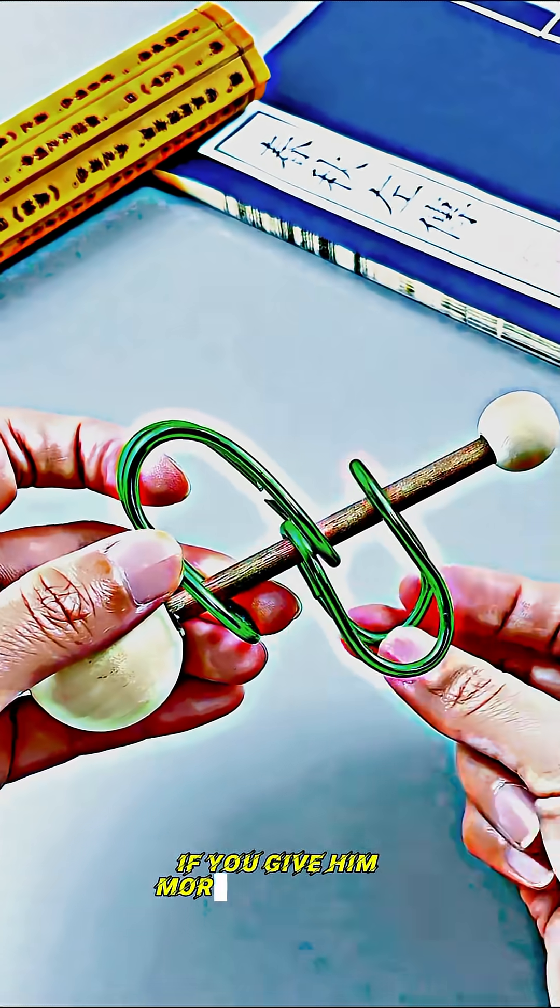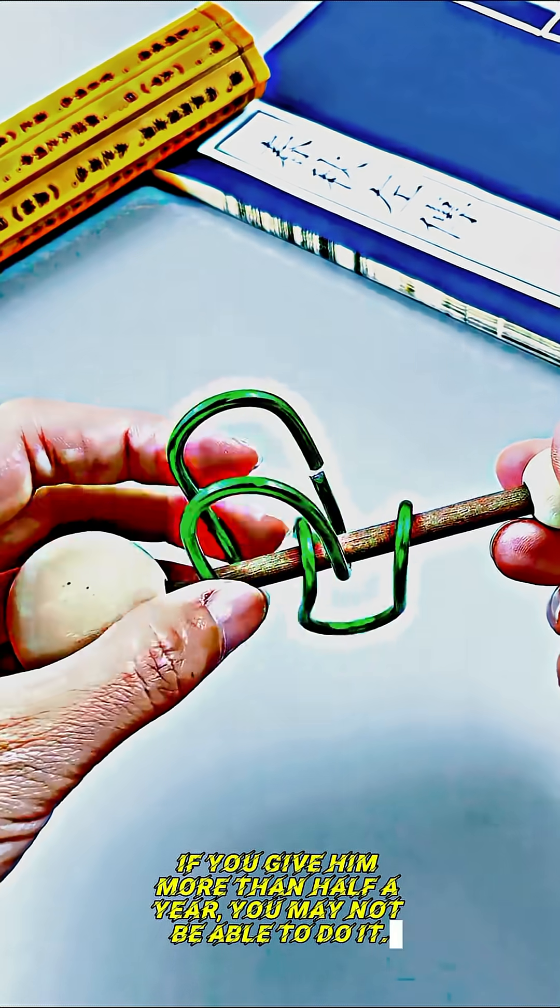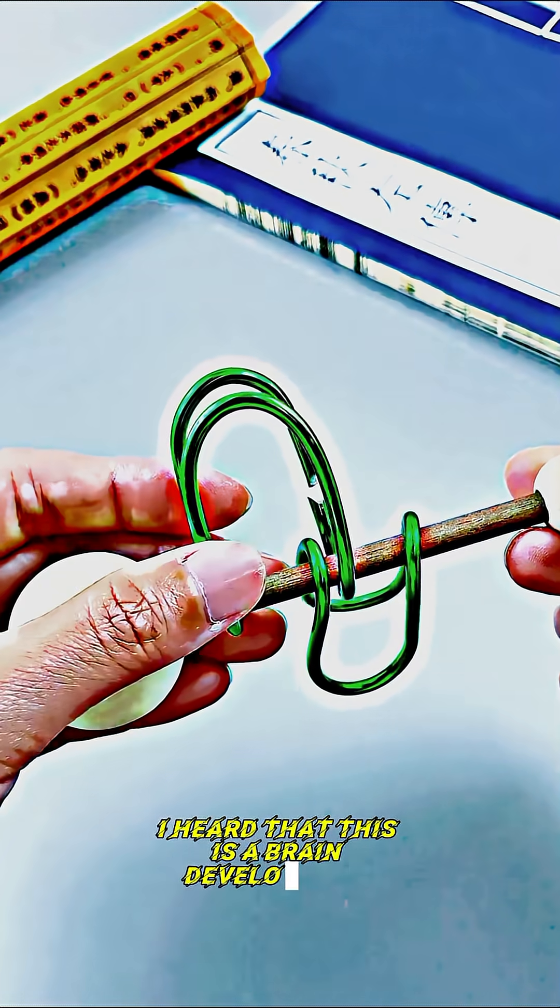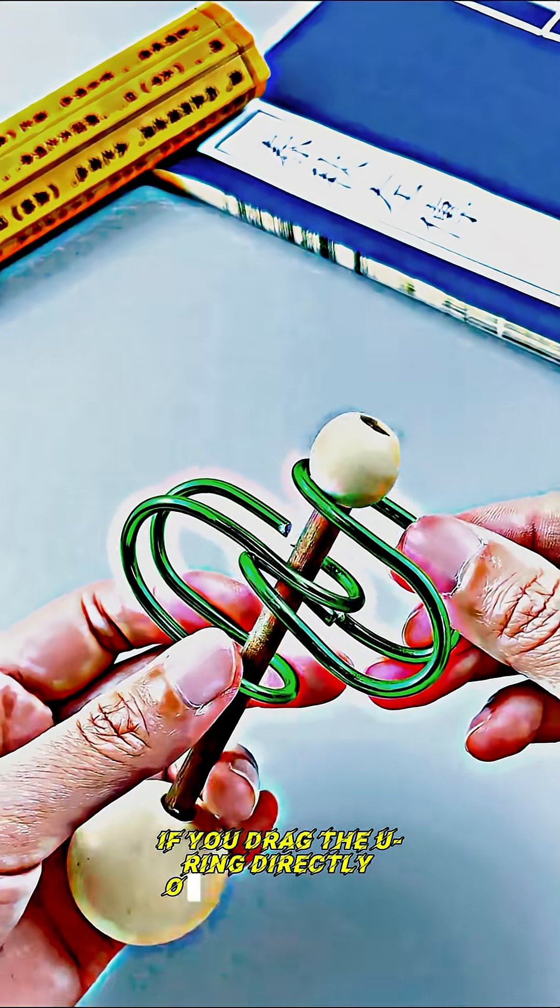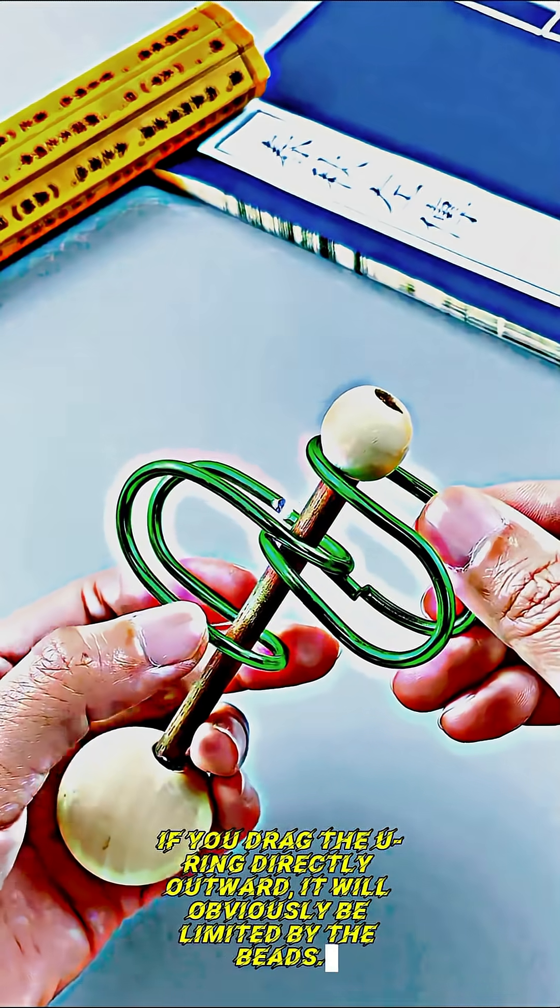A confused person, even given more than half a year, may not be able to do it. I heard that this is a brain development system carefully created by the ancients for children. If you drag the U-ring directly outward, it will obviously be limited by the beads.